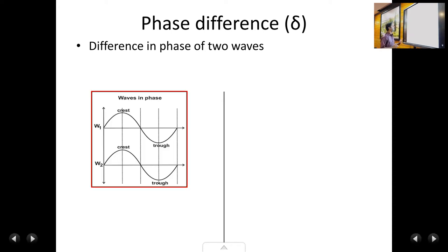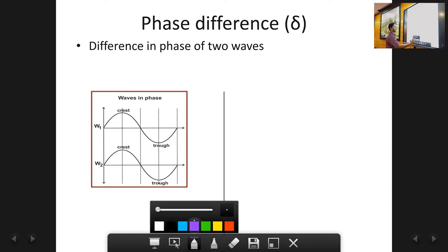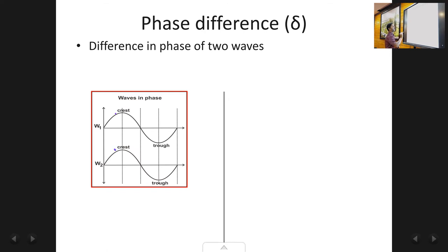Two or more waves are said to be in phase with respect to each other if the crest of one wave comes exactly over the crest of the other wave, and the trough of one wave comes exactly over the trough of the other wave. As you can see in this figure, the crest of this wave comes exactly over the crest of the other, and the trough of the first comes over the trough of the second — they are exactly overlapping. So graphically, two waves are in phase when crest comes over crest and trough comes over trough.